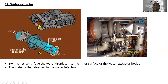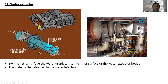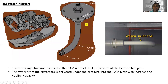The water extractor — dry air exits from one side and wet air enters from the other. Static spiral vanes centrifuge the water droplets into the inner surface of the water extractor body. The water is then drained into the water injectors via water feed lines.